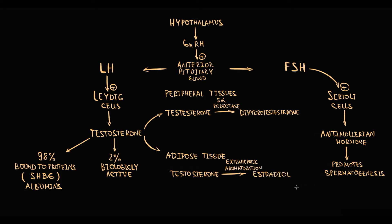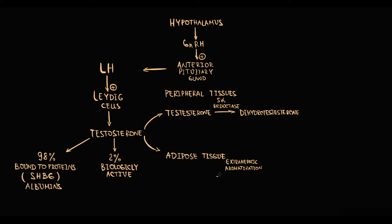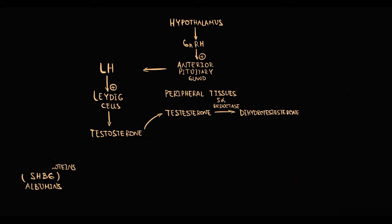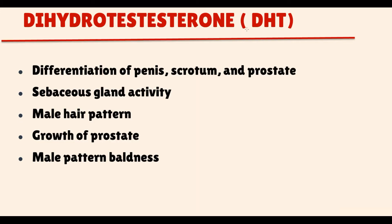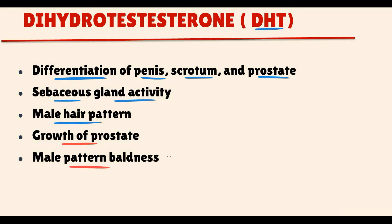That's how the normal process of sex hormone secretion looks like. In our discussion, the major player is dihydrotestosterone. This hormone is absolutely vital in fetal differentiation of male genitalia, and is also responsible for sebaceous gland activity and male hair pattern. However, there are two unfavorable effects: dihydrotestosterone stimulates growth of the prostate and also drives male pattern baldness.